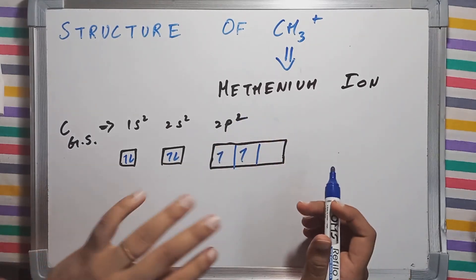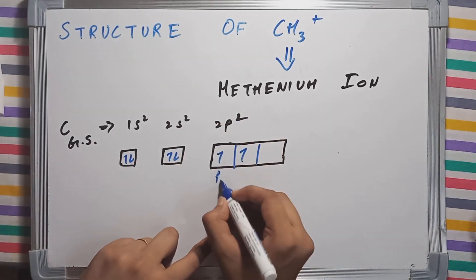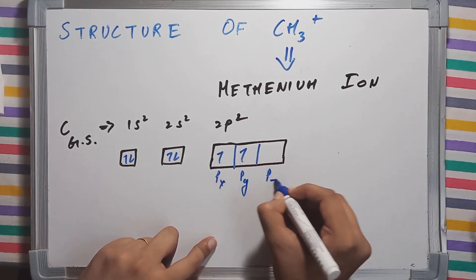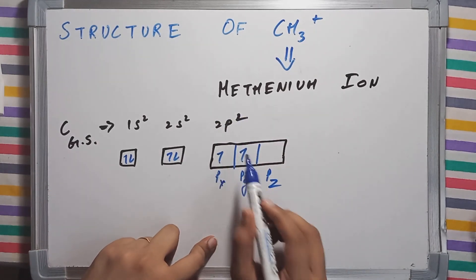Now the 2p subshell has three orbitals: Px, Py and Pz, and it has two electrons.